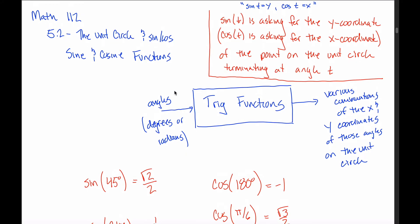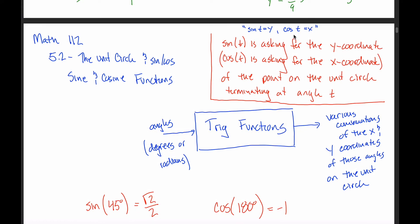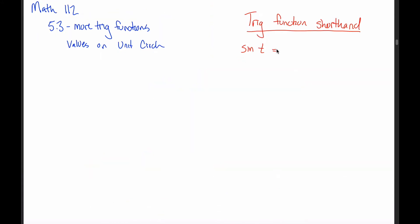Back in 5.2 when I talked about trig functions, I said that all they are are these different functions that take in angles that can either be in degrees or radians, and they return various combinations of the x and y coordinates of those points on the unit circle. Sine is just the y coordinate and cosine is just the x coordinate. The sine of some angle t is always equal to the y coordinate on the unit circle, and the cosine of some angle t is always equal to the x coordinate.